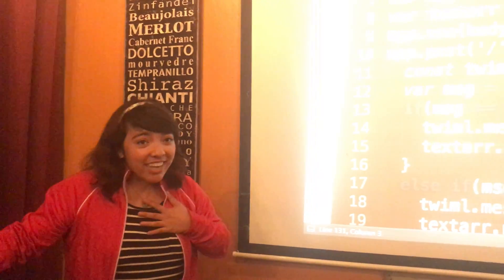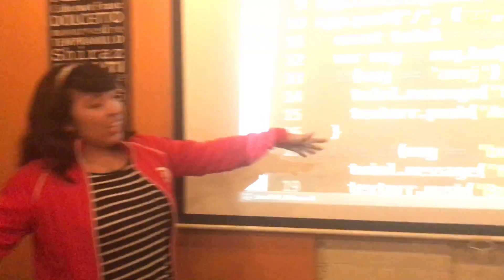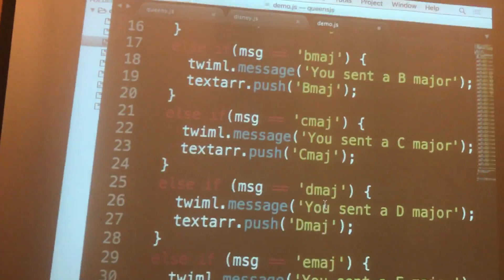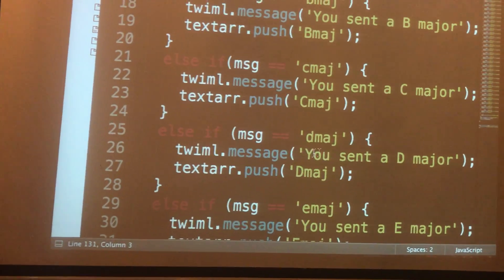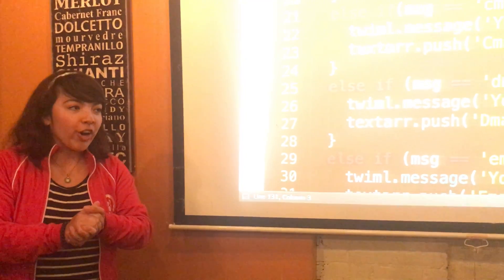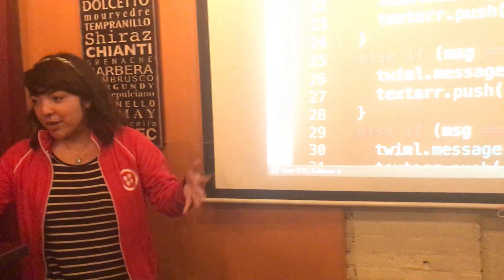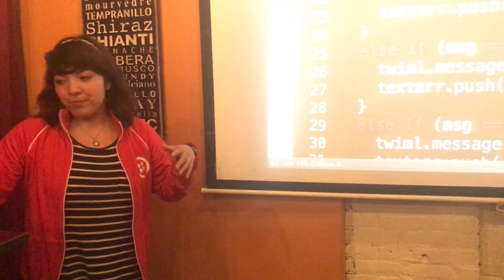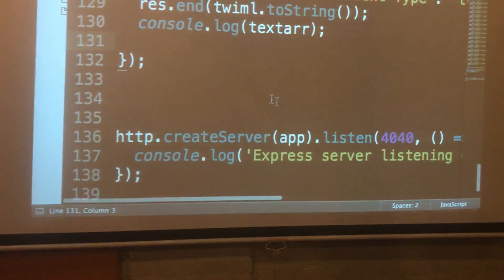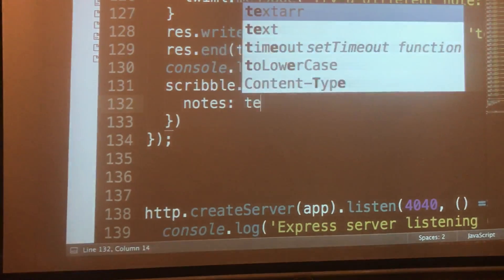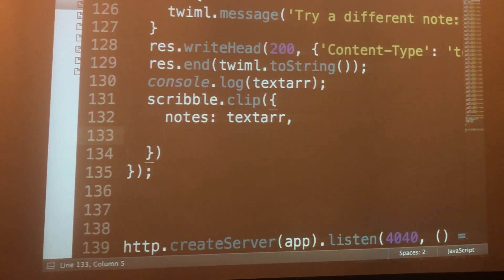Now for some more audience participation, we're going to make an app together and make music together. I do have some boilerplate code — this is the Twilio Express app. You're basically going to send one letter or one note at a time. You can send a plain A, B, C. If you want to get complex, send A major as A-M-A-J, or diminished as D-D-I-M, or augmented as D-A-U-G, or minor as A-M-I-N. We have a text array that will fill with what you send in.